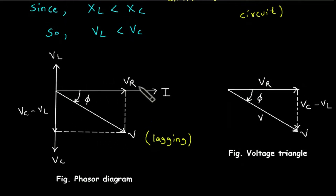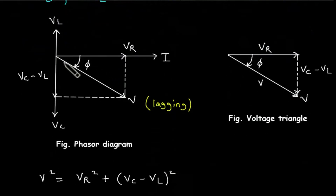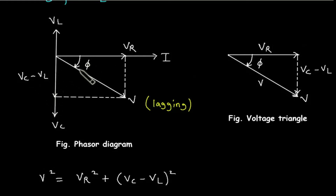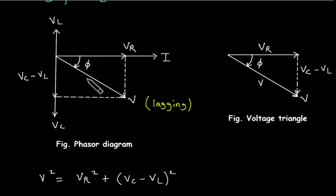This is the phasor diagram for XL less than Xc. Current I is taken as the reference. VL is smaller as compared to Vc, so the net reactive component will be Vc minus VL, and the resultant voltage is lagging the current I by phase angle phi. From this we can draw the voltage triangle: the opposite side is Vc minus VL, the adjacent side is Vr, and V is the applied voltage.